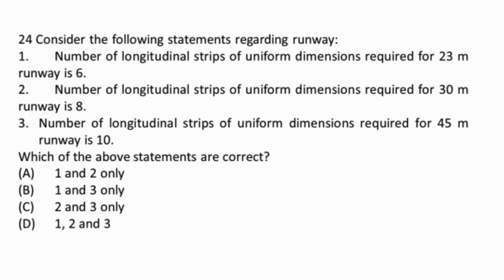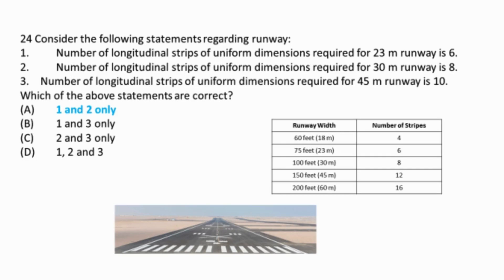Question 24: The number of longitudinal strips of uniform dimensions required for a 45-meter width of runway is 12. The number of longitudinal strips required for a 23-meter width of runway is 6, and for a 30-meter runway is 8.